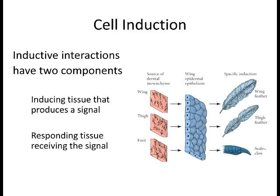If you put wing mesoderm under the ectoderm, it will form into wing feathers. Thigh mesoderm produces thigh feathers, which are different. Foot mesoderm produces claws. Even though the ectoderm is fully competent to become any ectoderm component, it matters what the inducing tissue is. Each mesoderm expresses a different combination of proteins causing those differences.